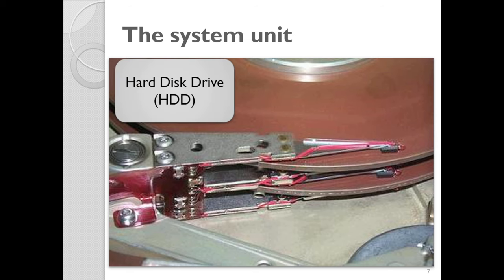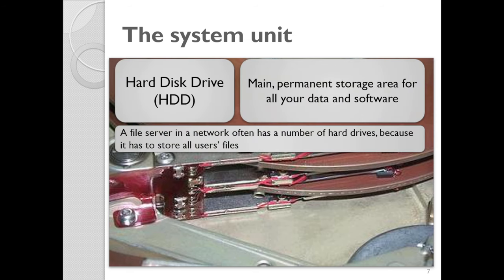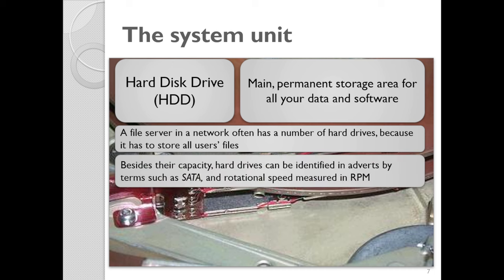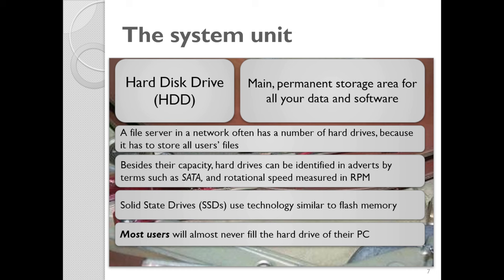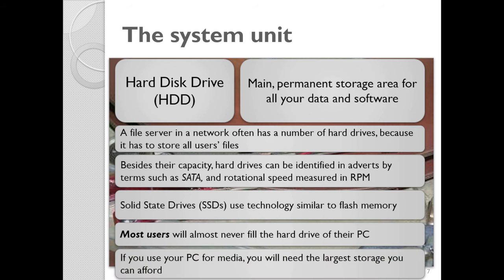The hard disk drive is the main permanent storage area for all of your data and software. A file server in a network has a number of hard drives to store all users' files and folders. Hard drives can be identified in adverts by terms such as SATA — the connector — and rotational speed; for example, a 7200 RPM hard drive. The higher that number, the quicker it responds. You also have SSDs, which use technology similar to flash memory — no moving parts and they work faster. The size of your hard drive is determined by what you're going to be using it for.